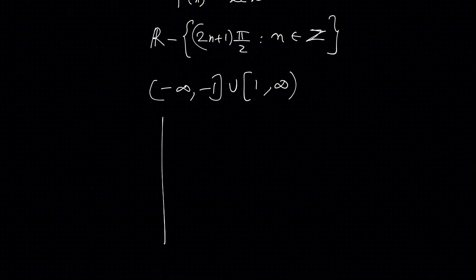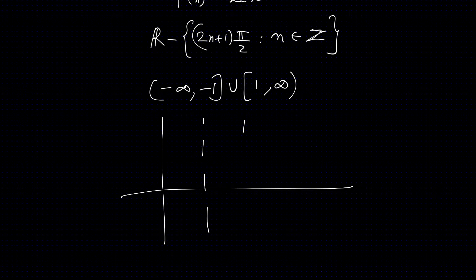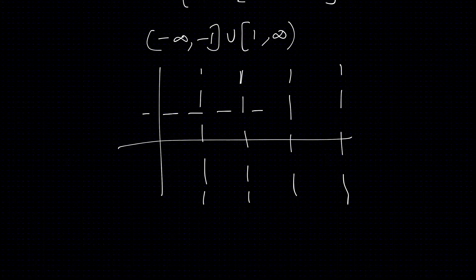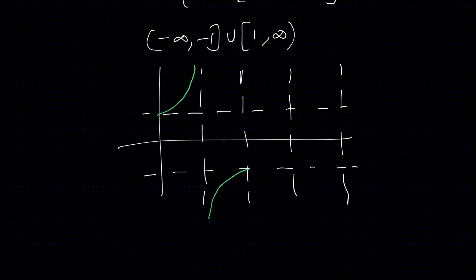In the first quadrant, the graph goes from 1 to infinity. In the third quadrant, it goes from negative to minus 1, then minus 1 to minus infinity. Coming back, in the third quadrant it goes from positive infinity to 1.